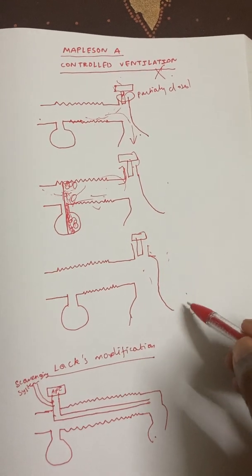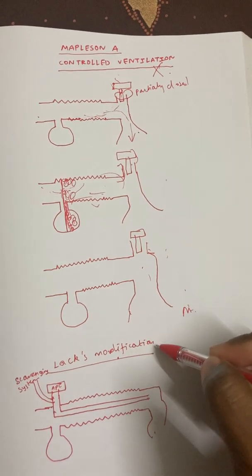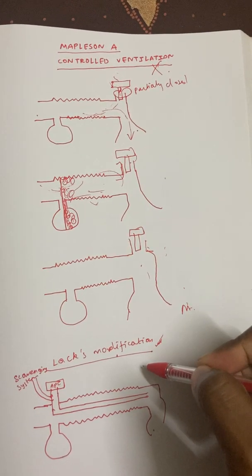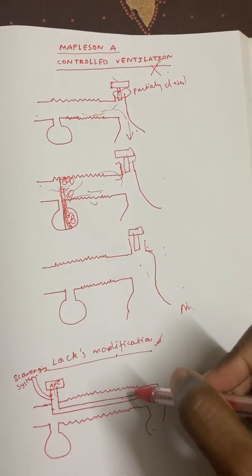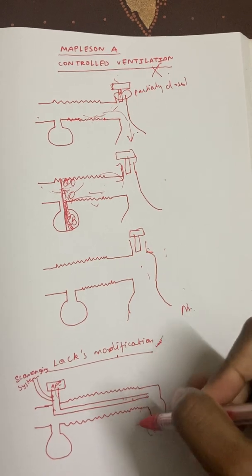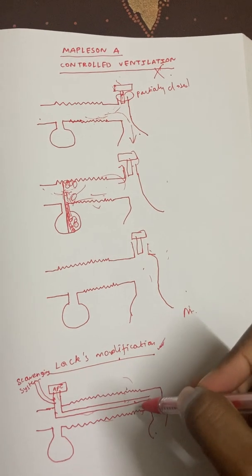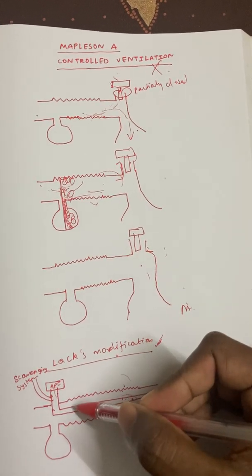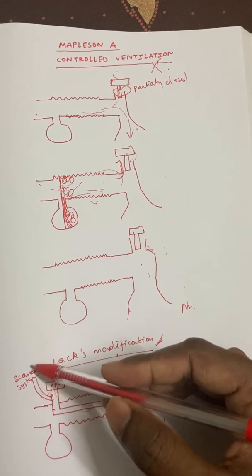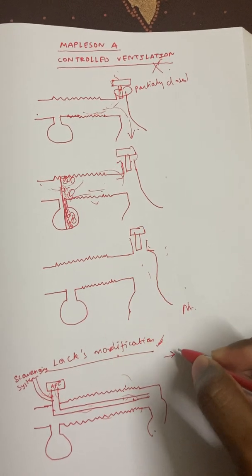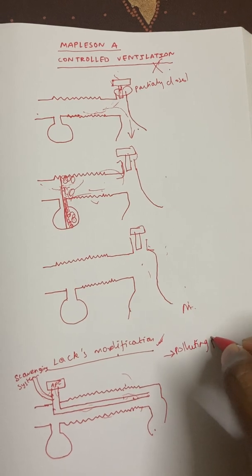A modification of Mapleson A is called the Lack modification. In the Lack modification, there is a separate inspiratory limb and expiratory limb. The expiratory limb is situated inside the inspiratory limb — the outer part is the inspiratory limb and the inner part is the expiratory limb. Through this inner expiratory limb, expired gases are collected by a scavenging system, so they do not pollute the environment. This is a major advantage of the Lack modification over the standard Magill circuit.